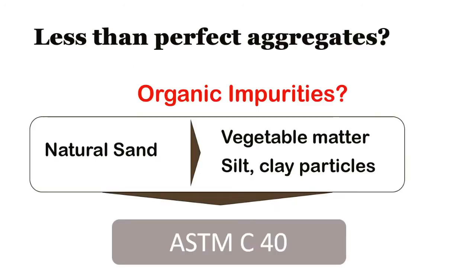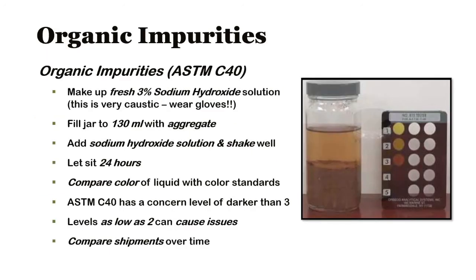If you get natural sands and want to ensure they've been properly washed, you can do the ASTM C-40 test for organic impurities. This involves putting some aggregate in a jar with a 3% sodium hydroxide solution, shaking it up, and letting it sit for 24 hours. If the sand has organic impurities, it will turn the liquid yellow to brown. By comparing the color to reference standards, you can determine if the organic impurity level is too high, which can cause issues ranging from low strength to discoloration on light-colored products in the field.